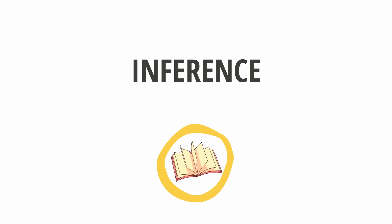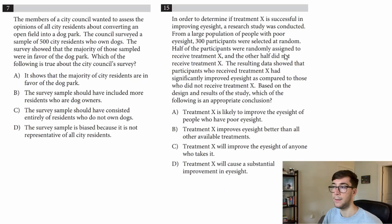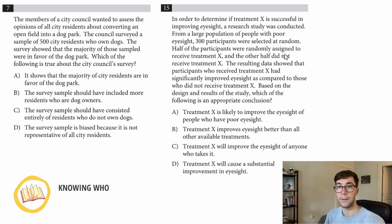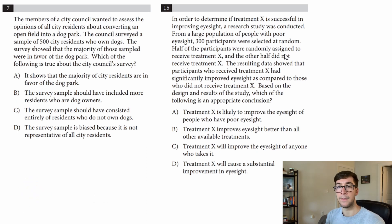On the screen here I have two inference problems. These are usually paragraphs where they give you a scenario of someone who took a sample and then ask what you can use that data to say. The key here is to identify what type of people are being sampled, because when you sample people and get data, you can only apply that data to the same type of people.